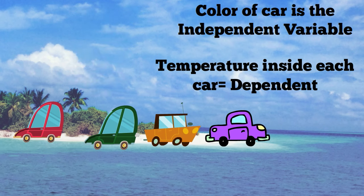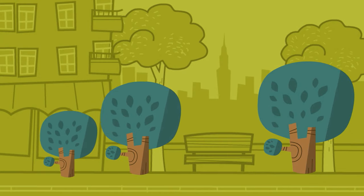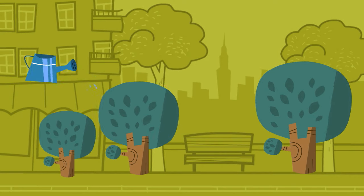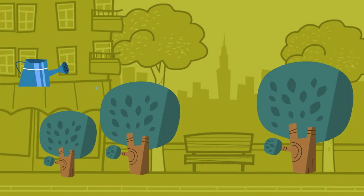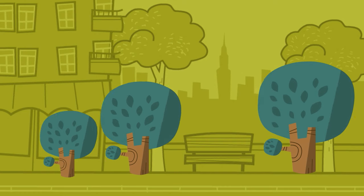Let's look at a couple of other examples. The height of a tree depends on the amount of water it receives. The amount of water the tree receives is the independent variable, and the height of the tree is the dependent variable because it depends on the amount of water it receives, and you are measuring the height of each tree.